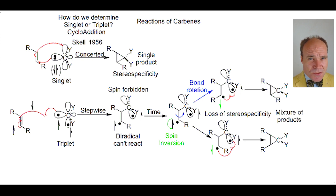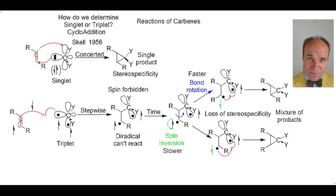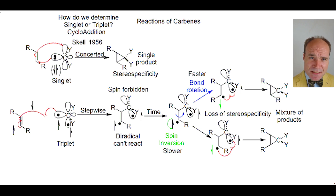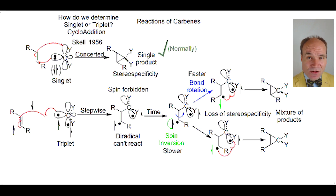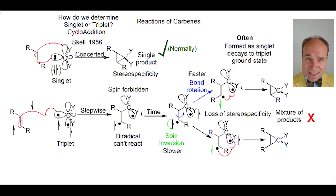For this to be true, we assume that the bond rotation is faster than the spin inversion. So we can distinguish between singlet and triplet state carbenes. When it comes to the formation of cyclopropanes, normally it's a singlet carbene that reacts with the alkene, because we observe a single product. Often, the carbene is formed as a singlet that then decays to a ground state triplet form.